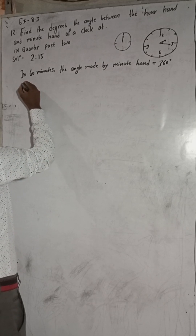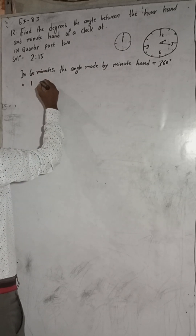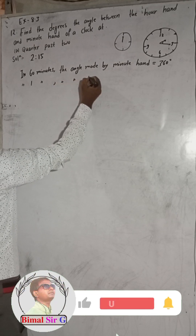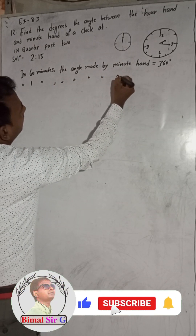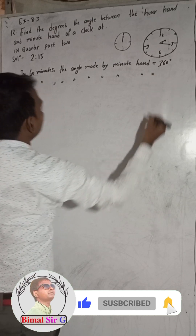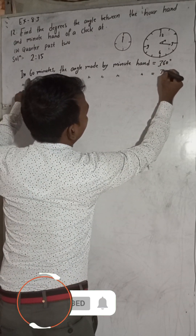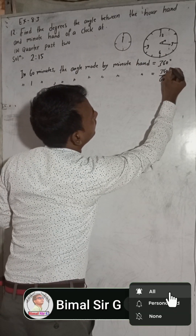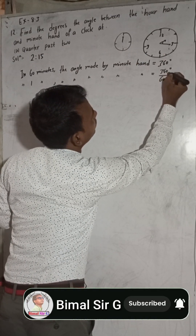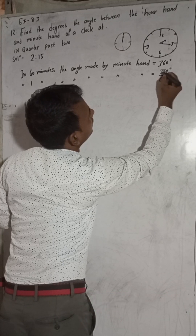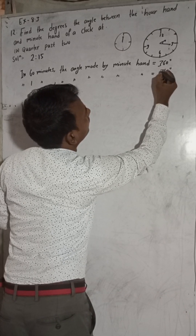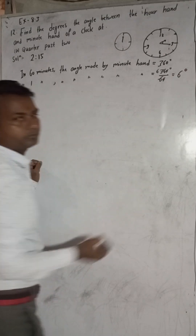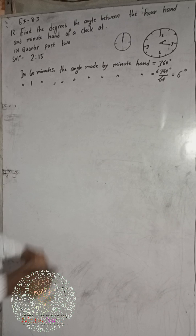Then, in one minute, the angle made by the minute hand is equal to 360 divided by 60. When we cancel, we get 6 degrees. So in one minute, the minute hand makes 6 degrees.